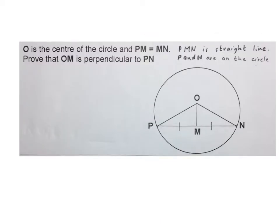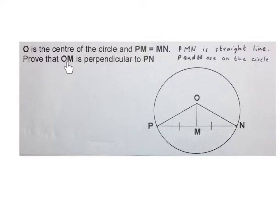In the first problem they say O is the center of the circle. PM is equal to MN — they tell us those two lines are equal. PMN is a straight line from there to there, and P and N are on the circle. We must prove that OM is perpendicular to PN, so we'll have to prove that that angle or both are equal to 90 degrees.